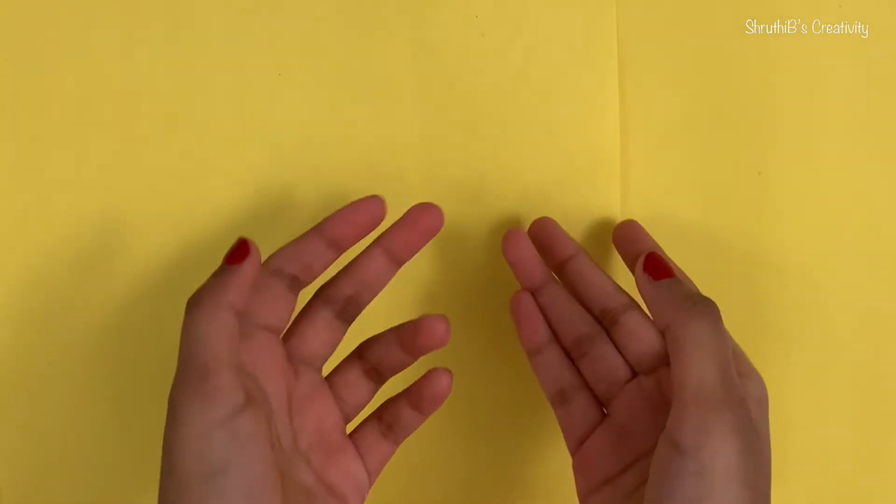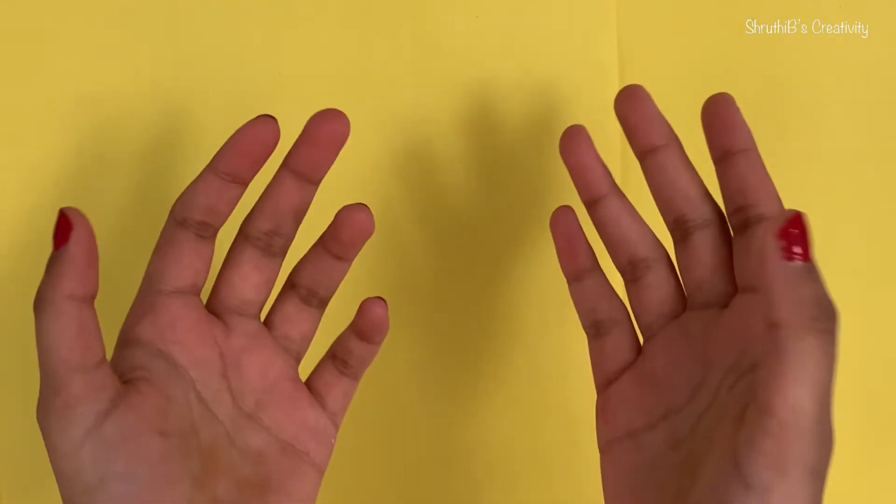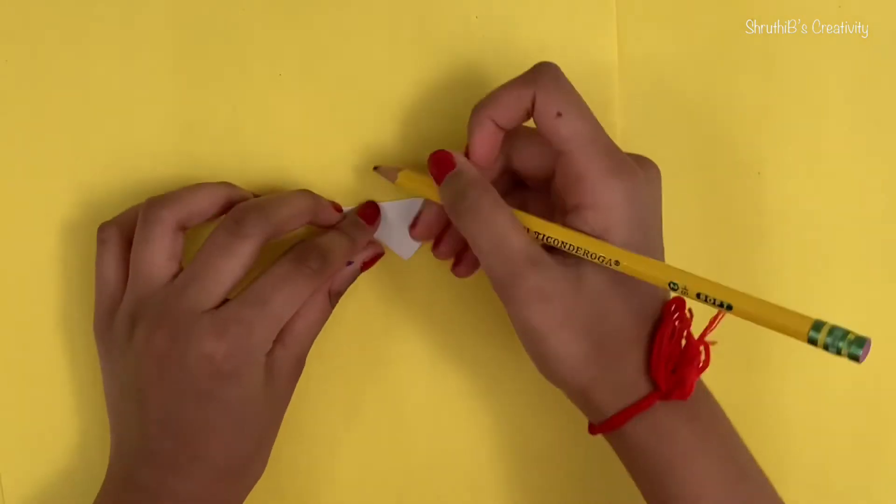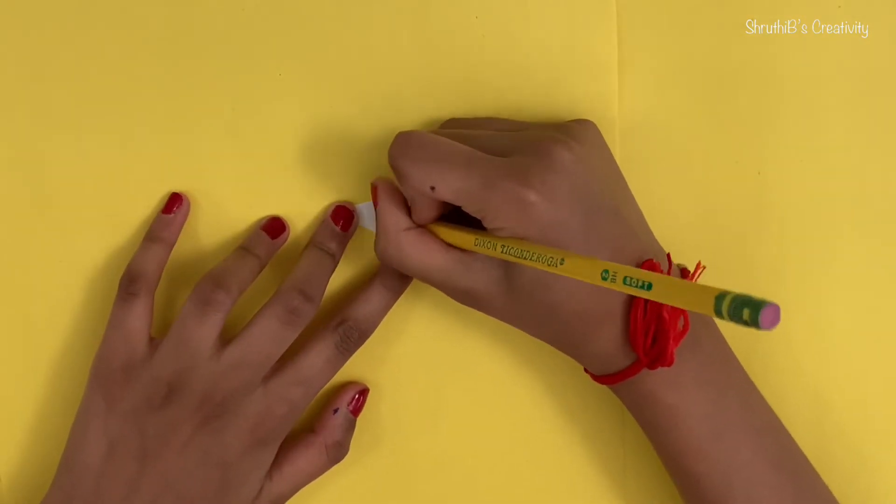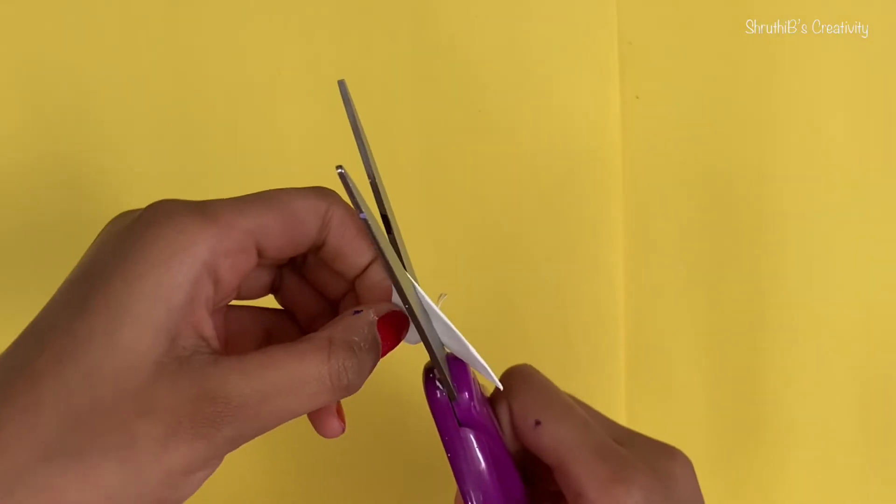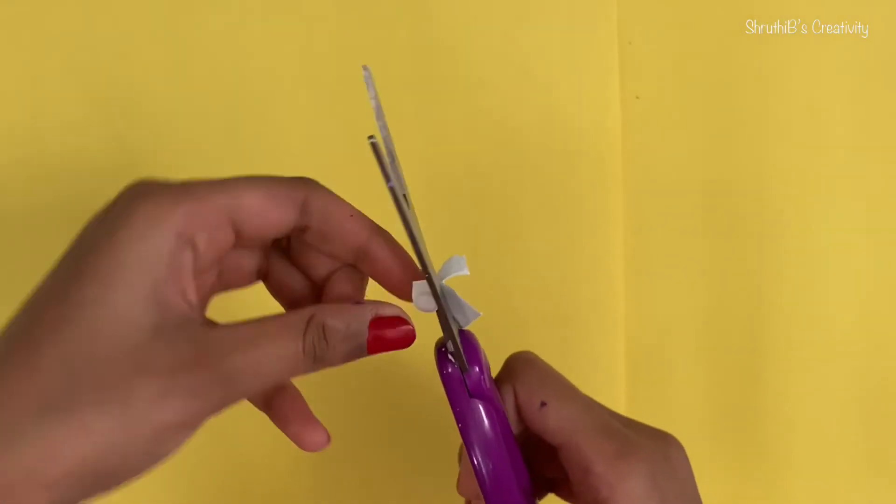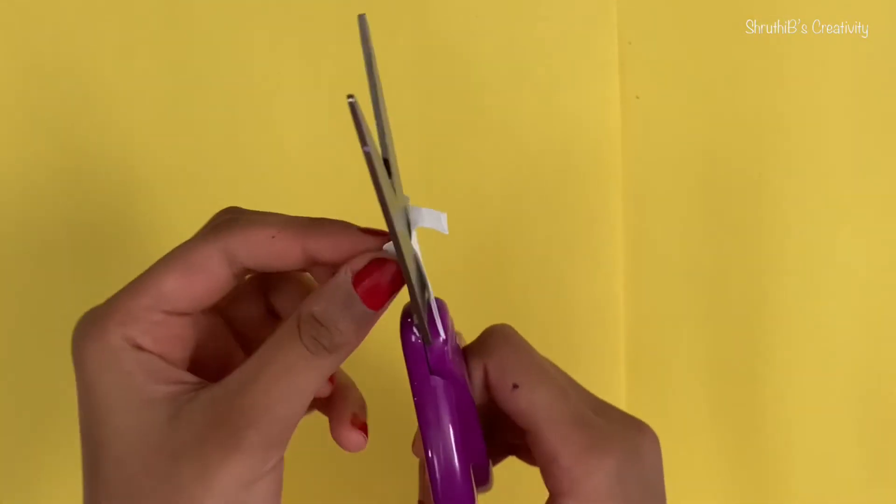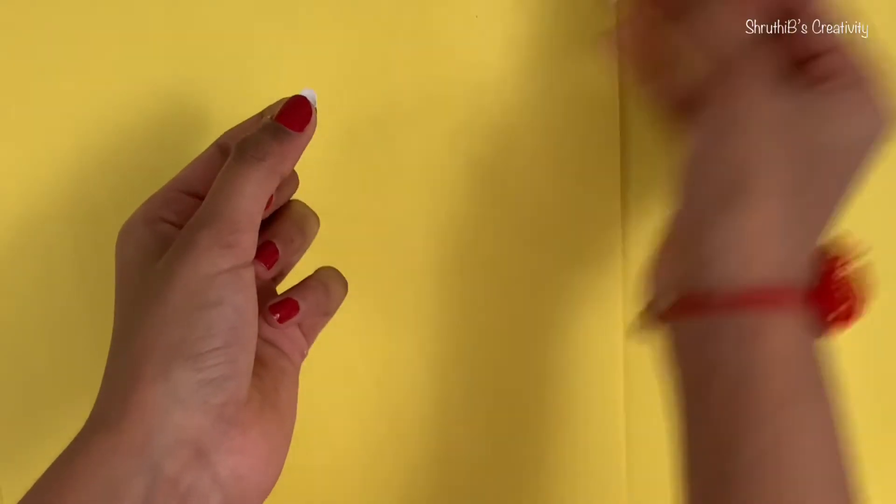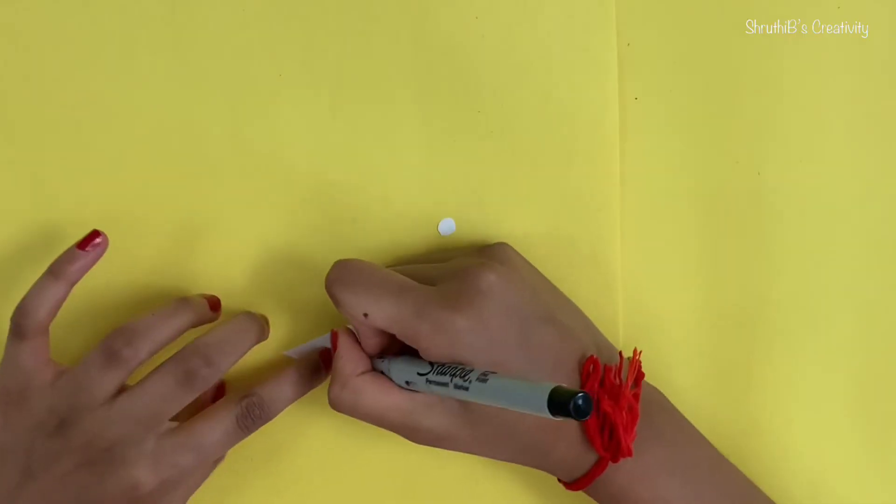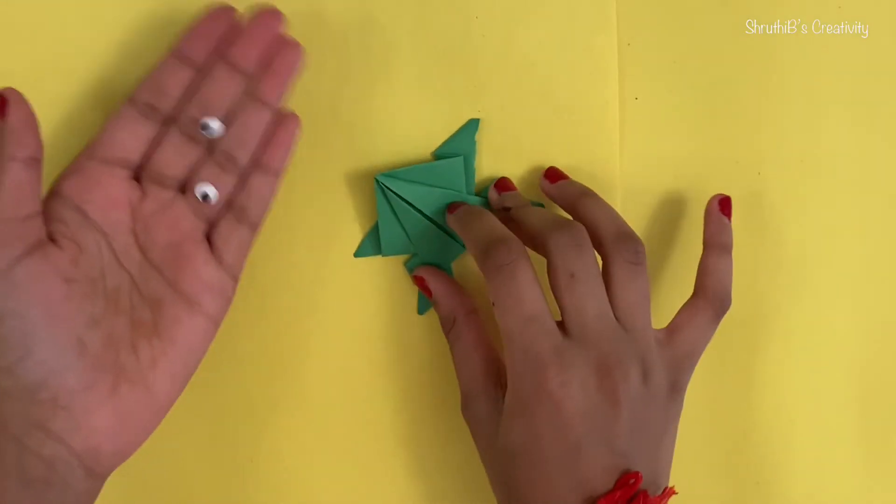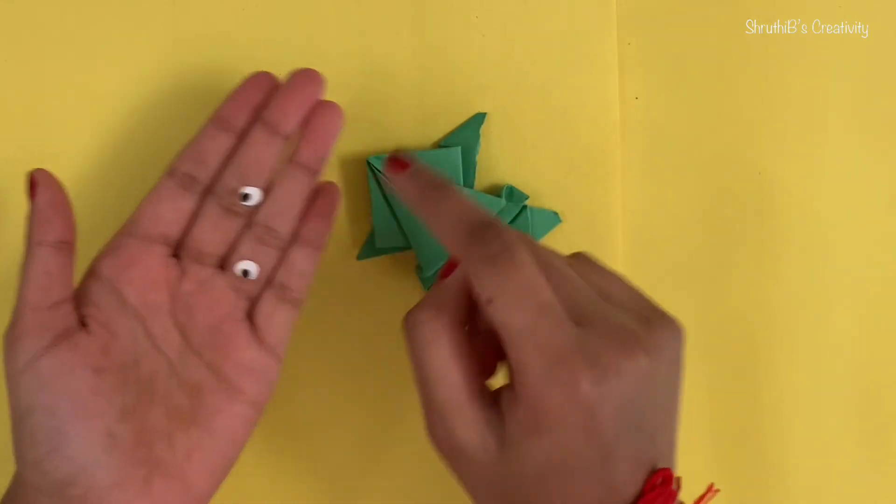If you want to add something more to your origami frog like eyes, here's how to do it. So take a small piece of white paper and then draw a small circle on one side and then cut it out. Then you might as well just draw some black dots in them. Next, you can glue it on the frog.